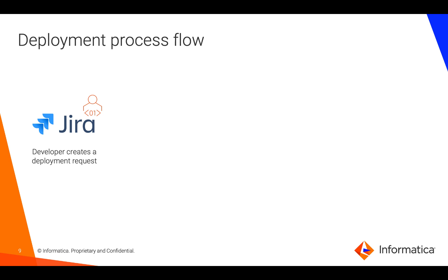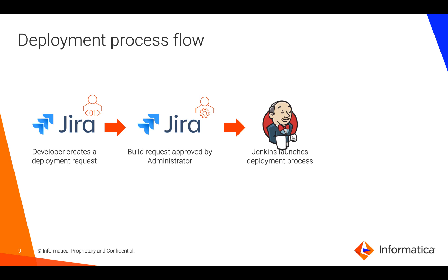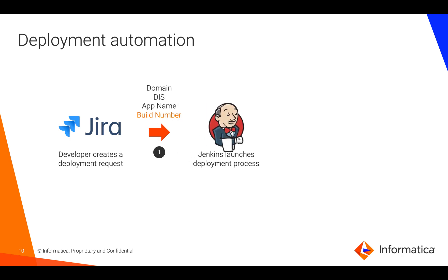When it comes to deployment, a developer creates a deployment request in a ticketing system such as Jira, which will go through an approval process. A release manager approves the request and then a process in Jenkins is launched which automates deploying the application archive file from the version control system into Informatica services. The developer provides deployment details along with the build number, which is the same internal reference number used in the build process flow — this is how we correlate a specific build request with one or more deployment requests.